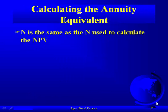The N used when calculating the annuity equivalent is the same N used to calculate the net present value — your planning horizon. For example, if you're planning to keep a tractor for 10 years, you discount its cash flows over that 10-year period to get the NPV. Then when you want the annual equivalent, you annualize over the same 10-year planning horizon.